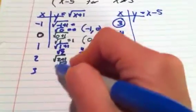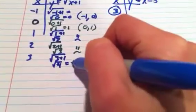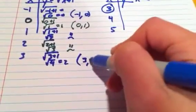Plugging in the 3, I'll have the square root of 3 plus 1, which is the square root of 4, which is 2. That gives me a nice point, 3, 2.